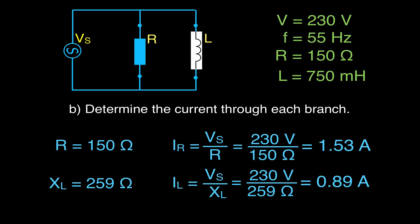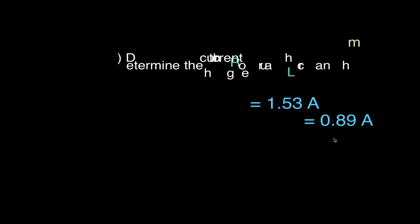Now don't forget — I didn't specify here whether this is the max voltage or the RMS voltage. Please remember that these voltages and currents are changing over time because we have an alternating current. If you're using the max voltage, then you're going to have the max currents. If you're using the RMS voltage, then you're going to have the RMS currents, but they are calculated the same way.